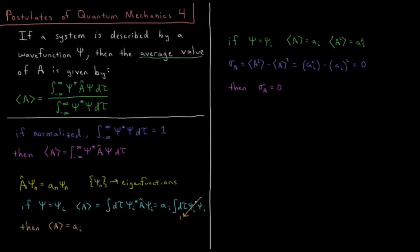Postulate 4 of quantum mechanics says that if a system is described by a wave function psi, then the average value of some observable property A is given by the following expression. The average value, sometimes called the expectation value, represented by a quantity in these sideways brackets here. We've seen this thus far for particle in a box in terms of average position x, average momentum p, position squared x squared, or momentum squared p squared.